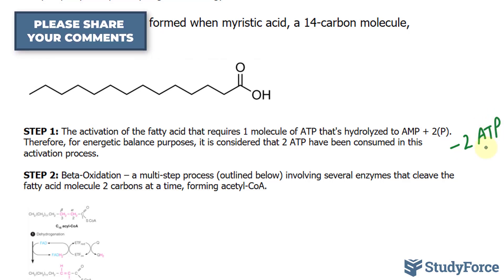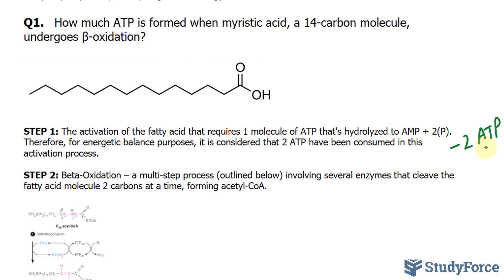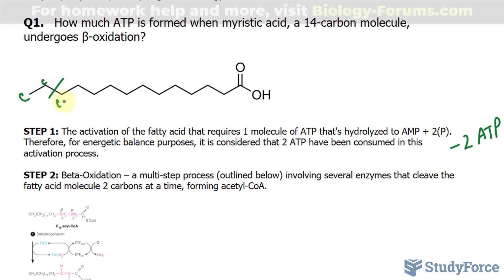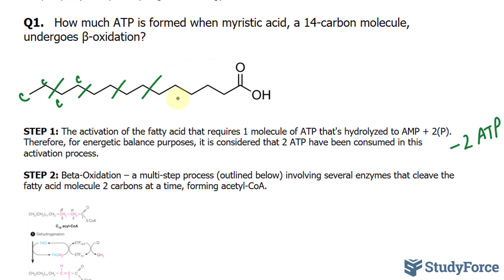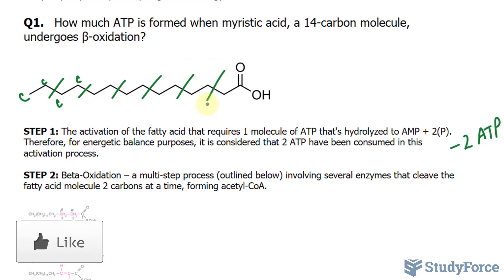In step number two, beta-oxidation occurs, and this is a multi-step process. All you need to know is that for each round of beta-oxidation, two carbon atoms are cleaved from the fatty acid chain. So in the first round these two carbons will be cleaved, then these two in the second round, and so on. We need six rounds total. What's special about the sixth round is that after you cleave the carbons, you'll actually be left with two acetyl groups. So you need six rounds to cleave a 14-carbon molecule into seven acetyl groups.